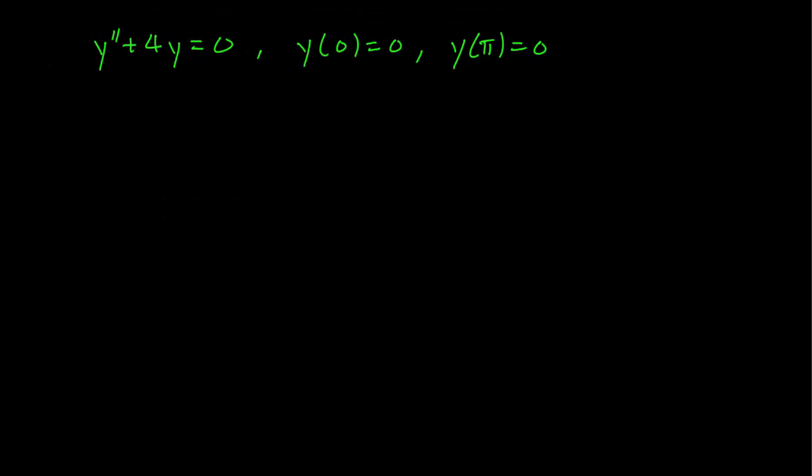This is an example of an endpoint problem. We have a very harmless looking differential equation, second order, linear. And we know that the function is going to be 0 at 0 and 0 at pi.